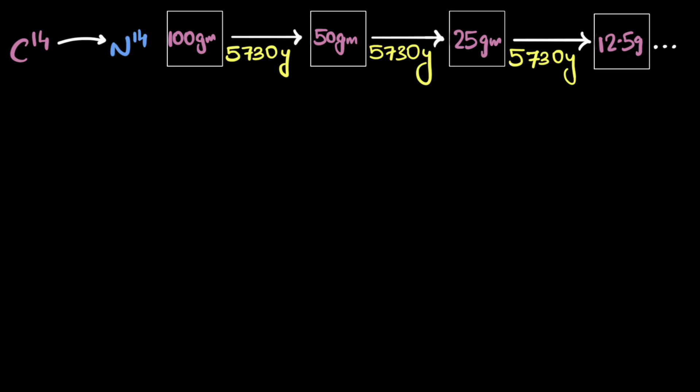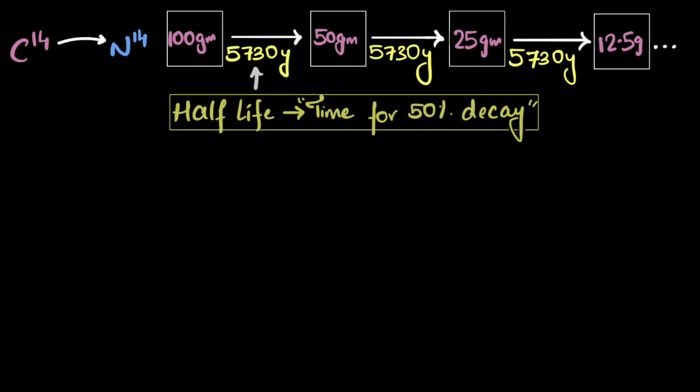So this means regardless of whatever amount of carbon-14 you have with you, it doesn't matter what amount you have, but if you wait for 5,730 years, it'll reduce to half its value, half of whatever you have right now. And therefore that number is called half-life. It's a number that tells you how much time you have to wait for 50%, half of the amount of stuff that you have to decay. It could be half of the mass that you have to decay, it could be half of the number of atoms that you currently have to decay, number of moles, whatever. It's half of the amount of stuff. How much time you have to wait for half this amount of stuff to decay.